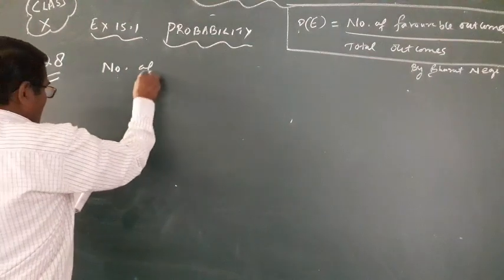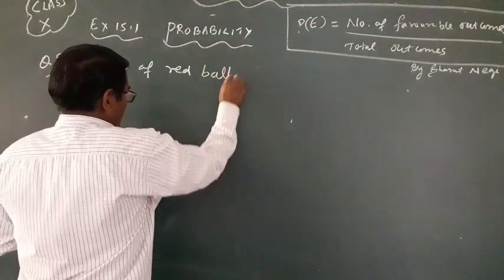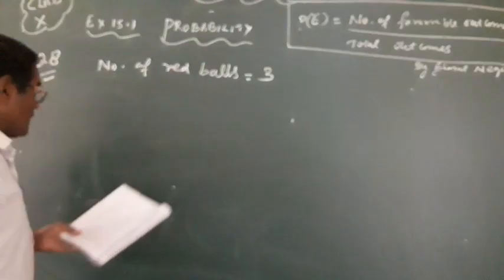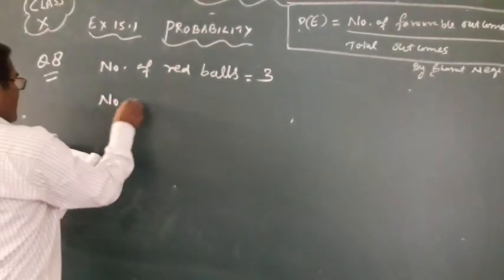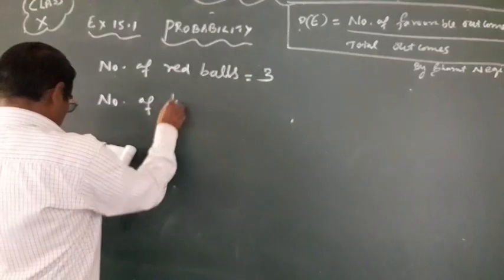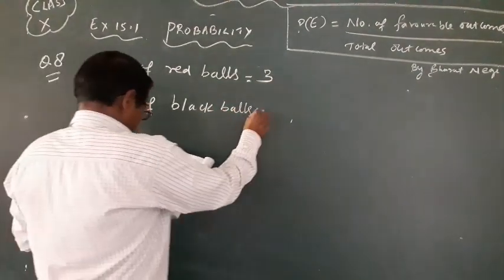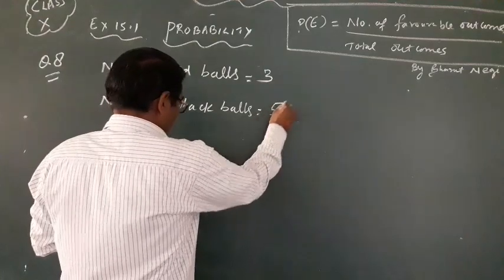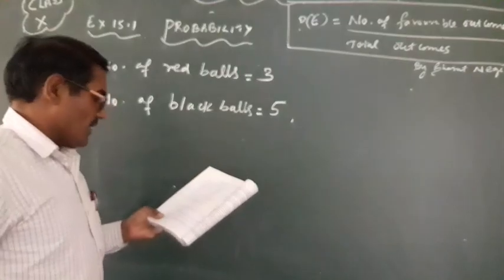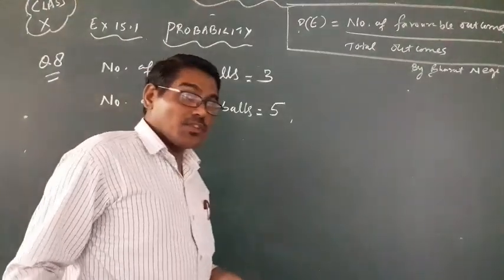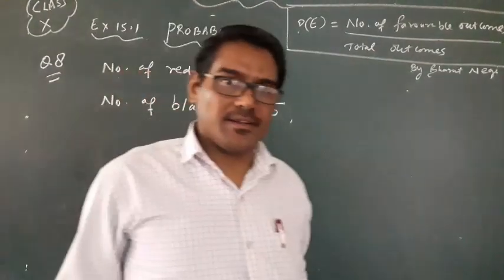A bag contains red balls. Number of red balls is 3. Number of black balls is 5. A ball drawn at random. At random that means you have to select without order. That we call at random.